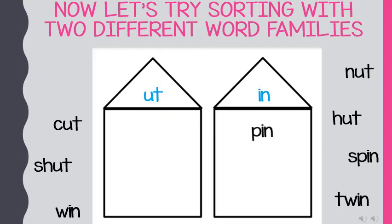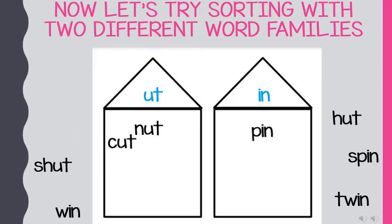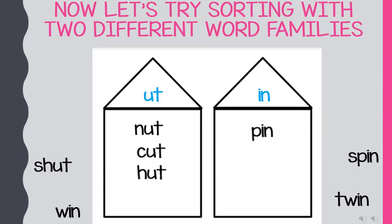Let's try the next one: 'nut.' I hear 'ut,' so that means it goes with the 'ut' sound. Then we have the word 'cut' — 'ut.' And the word 'hut' — there is another one with that 'ut' sound, so that goes with 'ut.' And now we have the word 'shut' — I hear that 'ut' again, three in a row — 'ut.'